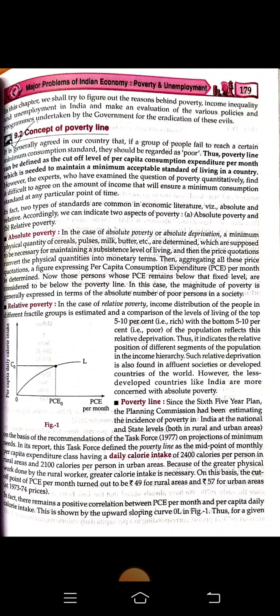Since the Sixth Five-Year Plan, the Planning Commission had been estimating the incidence of poverty in India at the national and state level, both in rural and urban areas, on the basis of the recommendations of the Task Force 1977 on projections of minimum needs. The Task Force defined the poverty line as the midpoint of a monthly per capita expenditure class having a daily calorie intake of 2,408 calories per person in rural areas.